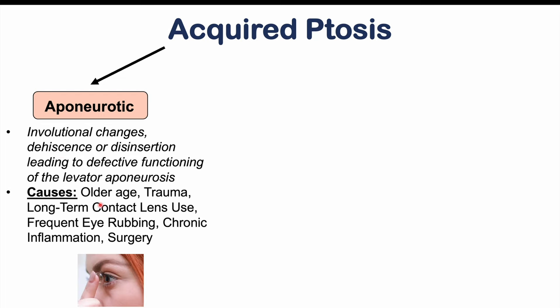Important causes of aponeurotic ptosis include older age, as the levator aponeurosis can shrink and the muscle structure weakens. Trauma to the eye can disrupt the aponeurosis anatomy. Long-term contact lens use is another important cause — the eyelid rubs against a dry contact lens with every blink, weakening the levator aponeurosis. Frequent eye rubbing and chronic inflammation, such as from atopic triad or allergic rhinitis with swollen eyelids, are also causes. Post-surgical changes can cause this as well.